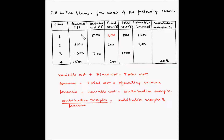Now we don't have the revenue, but we have the total cost and the operating income. Since revenue minus total cost equals operating income, x minus 800 equals 1200, so x equals 1200 plus 800, which is 2000. So the revenue is 2000 dollars.